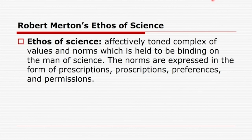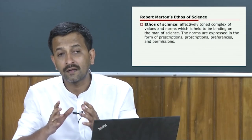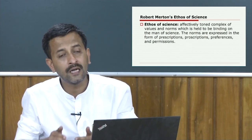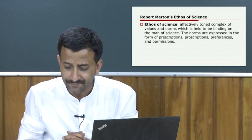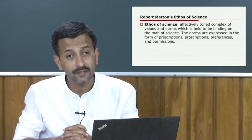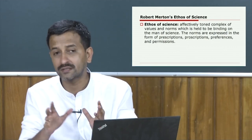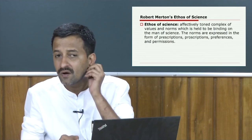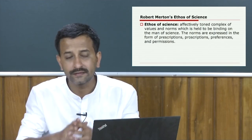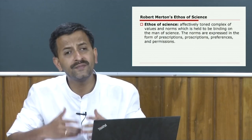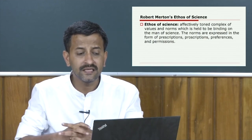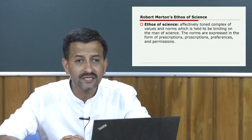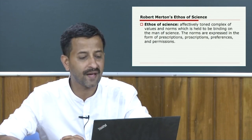Merton is mainly concerned with the cultural structure of science as an institution — not with the method of science, but its mores and norms. We will discuss the methods of science after dealing with science as a social institution as a whole, and Mertonian ethos of science in particular. What should be the moral framework? What should be the normative structure of science and its practitioners was highlighted by Merton. The ethos of science, for Merton, is the affectively toned complex of values and norms which is held to be binding on the man of science.